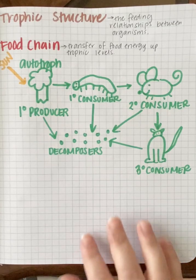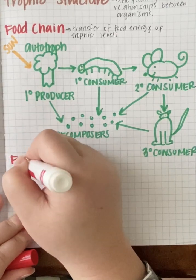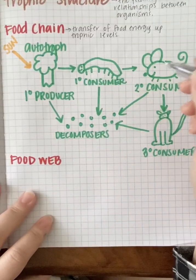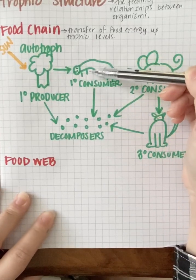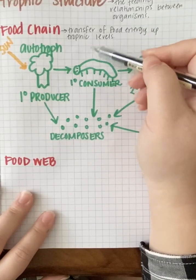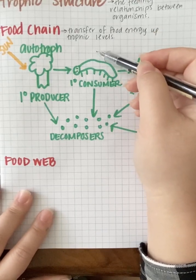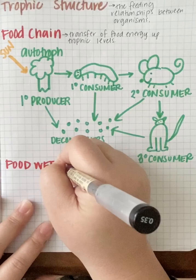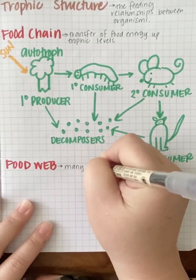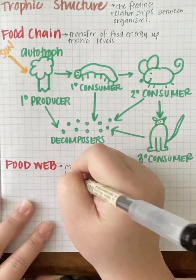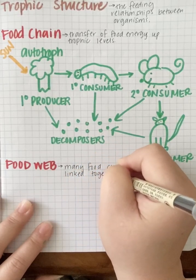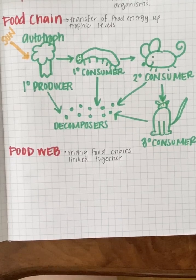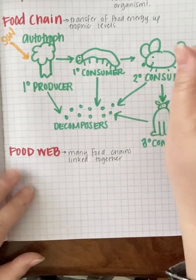A food web is simply many food chains placed together. Instead of just showing a caterpillar, mouse, and cat, a food web shows all the organisms consuming plant material — aphids, ants, bees — all primary consumers, secondary consumers, etc. A food web is many food chains linked together showing the feeding patterns of all organisms in the habitat. They tend to look really disorganized.